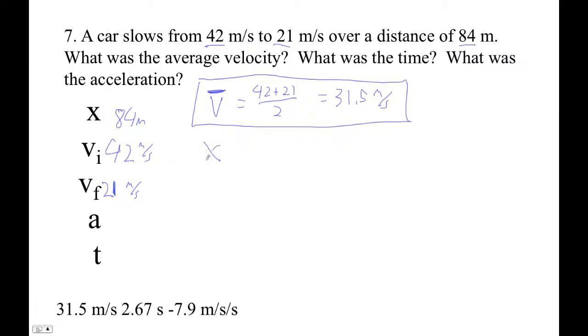I think I'll use this guy: x is one half vi plus vf times t. So that is one half. I'll just plug my numbers in. 84 is one half 42 plus 21 times t. Well, one half 42 plus 21 is 31.5.